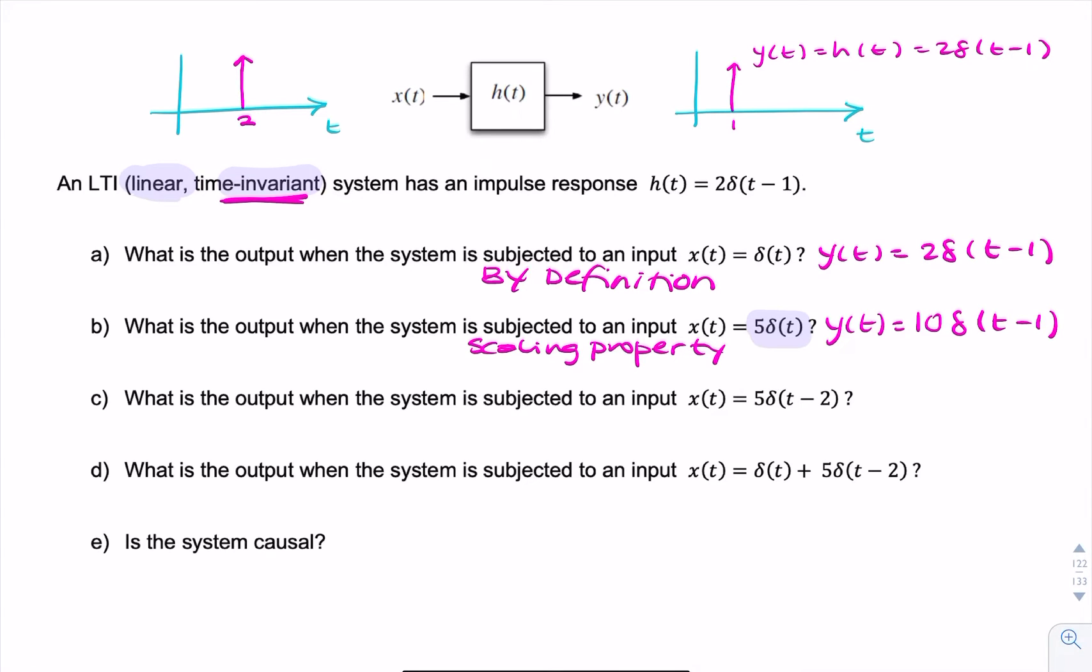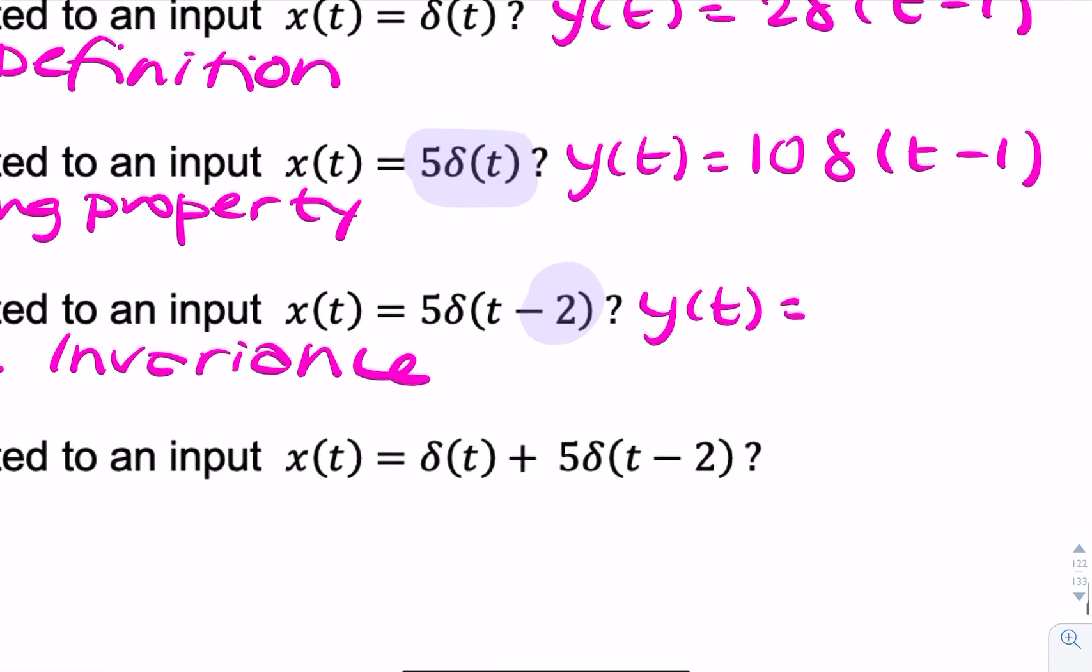So we can say, using time invariance, we know that y(t) needs to be shifted by 2 seconds. So it'll be exactly the same as what we wrote in part B, but shifted by a further 2 seconds.